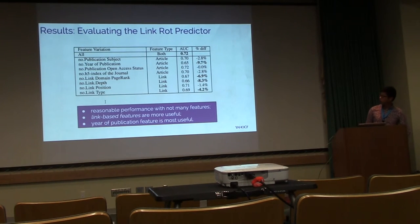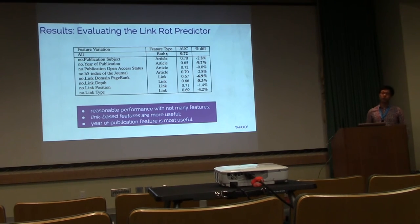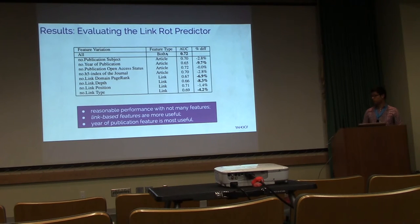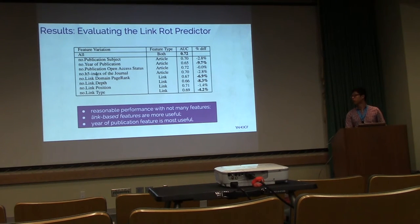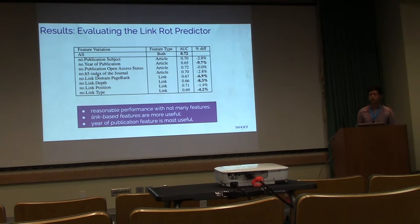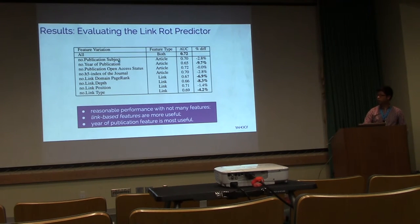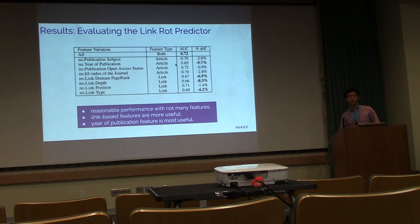So now we report the results. Overall, using all the features, you can see we have a reasonable AUC of 0.72, which is not amazing but still reasonable. That shows it's useful without any features. We also did a feature evaluation study, which means that for each of the features, we reduce one of them, and then we train a new classifier, and then we compare the performance against the one with all the features so we know the feature impact. We found that in general, the link-based features are more useful than the scholarly article features. The other thing is for each individual feature, we found that the year of publication has a bigger impact, which is not surprising as we have shown before.